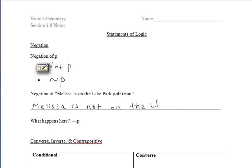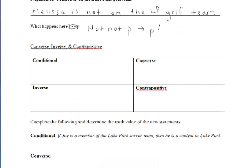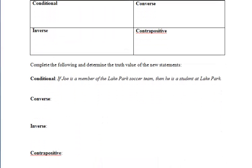So if we wanted to negate the sentence — for instance, 'Melissa is on the Lake Park golf team' — we would negate it and it would say 'Melissa is not on the Lake Park golf team.' If we have a double negation, so a not-not P, it's like a double negative. It turns into just P.